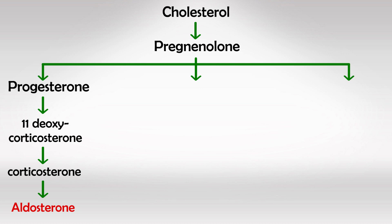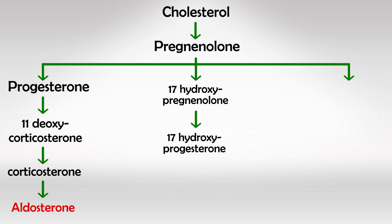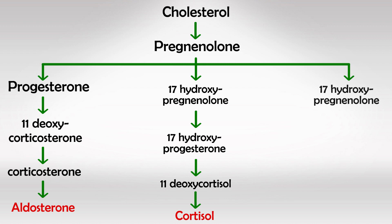For the cortisol pathway, we first convert pregnenolone into 17-hydroxypregnenolone, then into 17-hydroxyprogesterone, and then into 11-deoxycortisol, which is ultimately converted into cortisol.